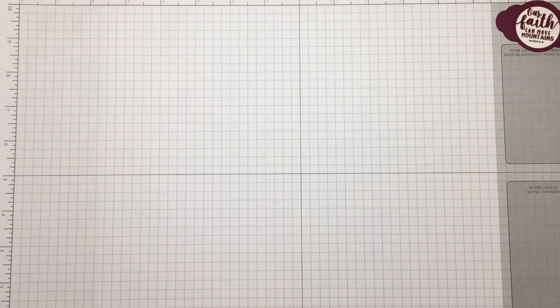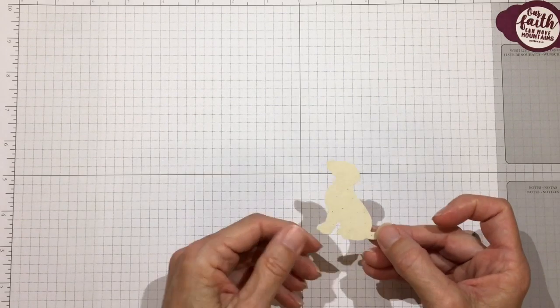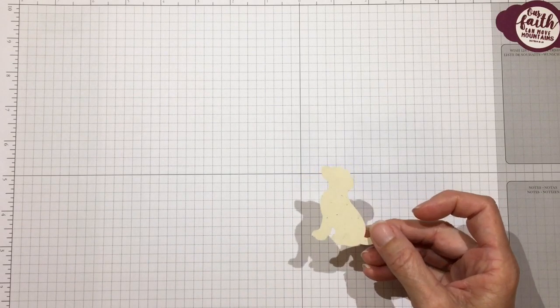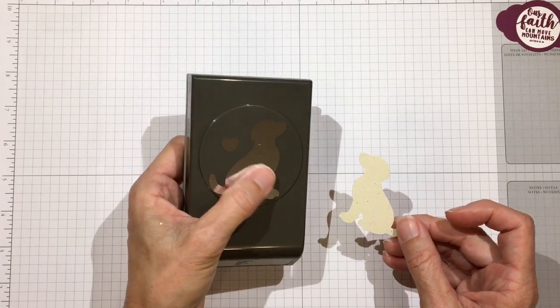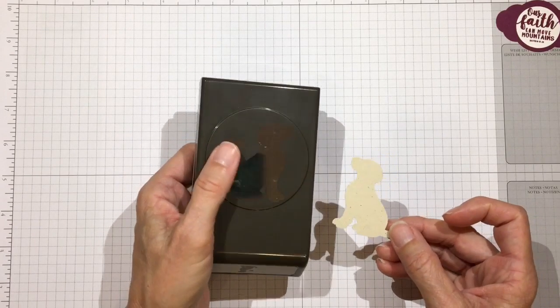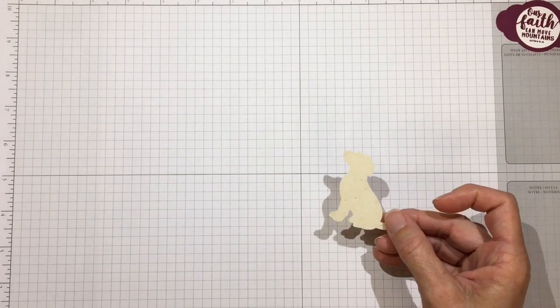Hi everyone, it's Darby from RejoiceAndCreate.com. Thanks for stopping by to watch my video today. Today I was trying to find a home for this little guy, a dog punch from Stampin' Up that just came out. I thought it was so adorable that I had to make a home for him, and this is the home that I came up with.